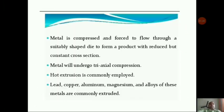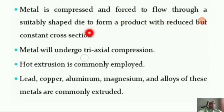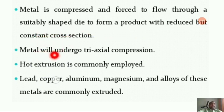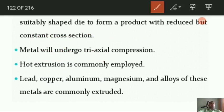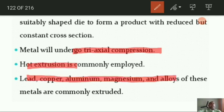Metal is compressed and forced to flow through a suitably shaped die to form a product with reduced but constant cross-section. The metal will undergo tri-axial compression — this is important to note. Here in extrusion, the metal has to undergo tri-axial compression. Generally, hot extrusion is employed. The common metals extruded are lead, copper, aluminium, magnesium, and alloys of these metals.